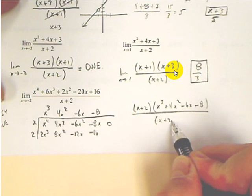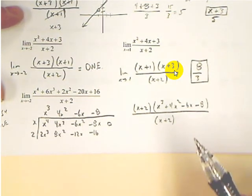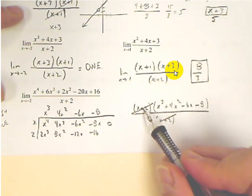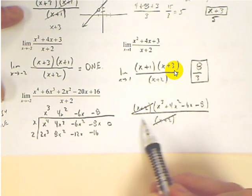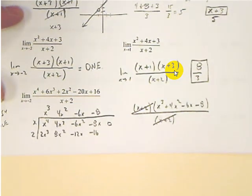So now, this is our new equation, our factored equation. This cancels with this guy. That means that negative 2, which makes this 0, got canceled. And if it gets canceled, it creates a hole on the graph, not an asymptote.